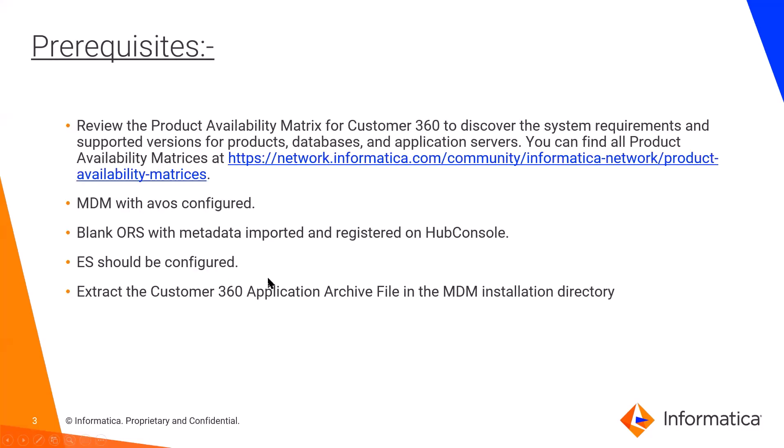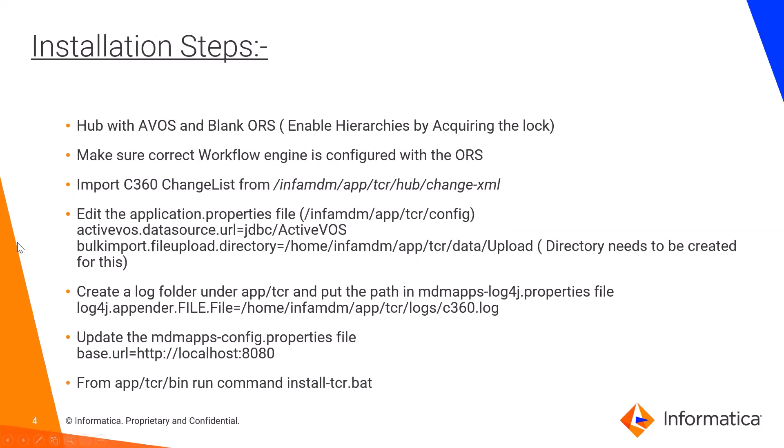Coming to the prerequisites, we have to review the PAM — that is the product availability matrix — for C360 to make sure the supported version of MDM database and application server is being used. MDM along with ActiveOS should be installed. A blank ORS with metadata imported should be registered with MDM Hub Console. Elasticsearch should be installed and configured with MDM. We get C360 installers in an archive file, so we need to extract those archives to the MDM installation directory.